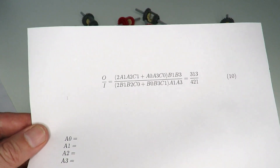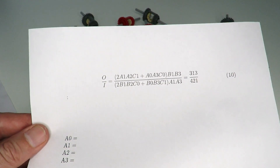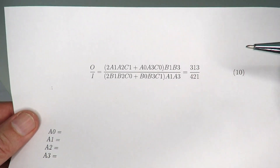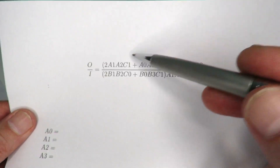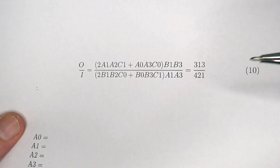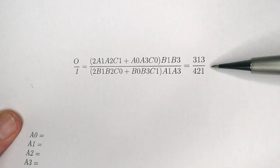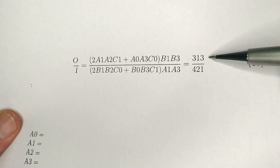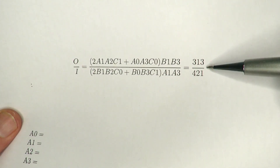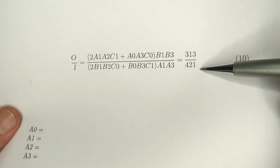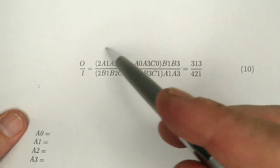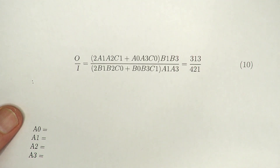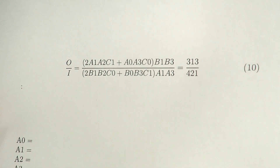To use this equation to actually design a particular N-to-P differential, I've created a worksheet. The equation is as before, and we have the desired N-to-P gear ratio — in this case 313 to 421. We need to choose all the parameters from A0 to C1 that satisfy that equation.